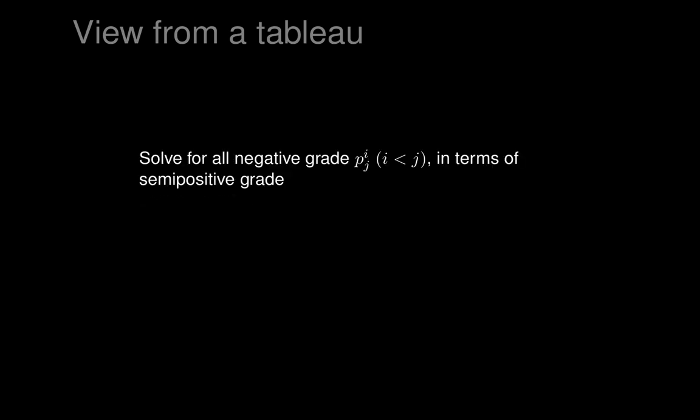Let's solve for all the negative-grade p_ij's in terms of the semi-positive grade ones. Semi-positive means not negative — I use that term to avoid double negatives in speech, which can be confusing. So we're going to solve for all the negative-grade p_ij's, where i is less than j, in terms of the semi-positive grades where i is greater than or equal to j. We want to solve those linear equations, so the question is: why is there a non-trivial linear equation for each negative-grade p_ij in terms of semi-positive grade coefficients?